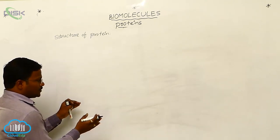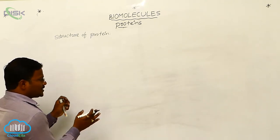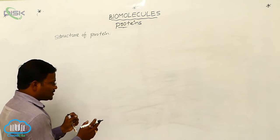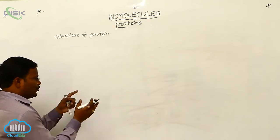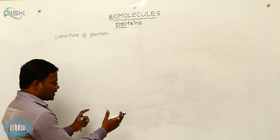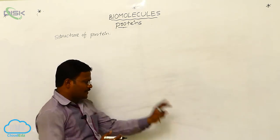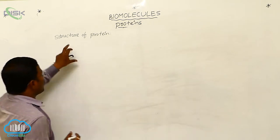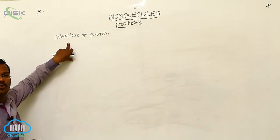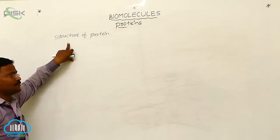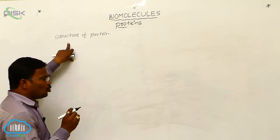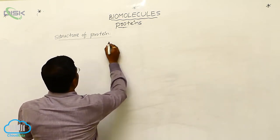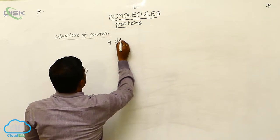After the mechanistic proof of how peptide bond formation takes place to produce a polypeptide, such polypeptides are termed as proteins. We have to learn the structure of proteins, which is explained in four different levels.